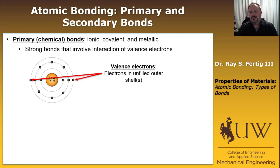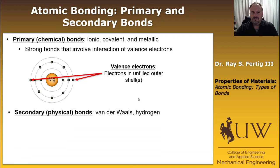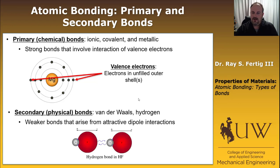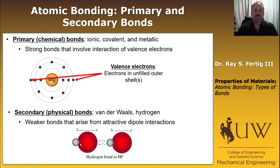Primary bonds are typically strong bonds that involve some sort of interaction of valence electrons. Your valence electrons are the electrons in an unfilled outer shell, and those are the electrons that typically participate in bonding. Your secondary bonds, sometimes called physical bonds, are your van der Waals and hydrogen-type bonds. These are typically weaker bonds, and they arise from dipole interactions — like hydrogen fluoride, where the fluorine atom has a strong negative component and the hydrogen has a positive component. They tend to align positive to negative, as opposed to positive-to-positive or negative-to-negative, which would cause repulsion.